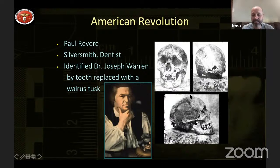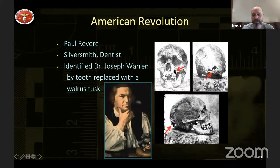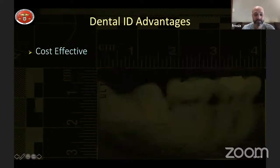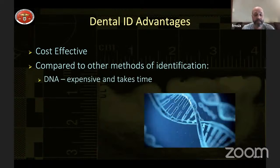What are the advantages of dental identification? It's cost effective and very quick compared to other methods. DNA is expensive and takes time, though some labs can now return results within 24 hours for high-profile cases. Fingerprints are also cost-effective and quick, if the remains allow it — decomposition or fire can eliminate them. Visual identification is not very reliable. Teeth are resilient and can survive extreme circumstances, including fire, trauma, and chemicals for quite a period of time.